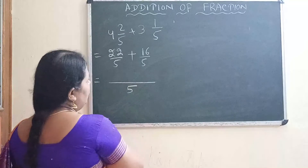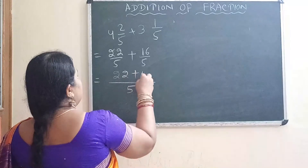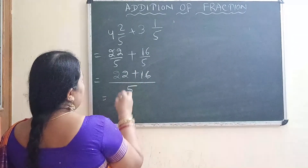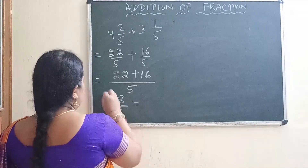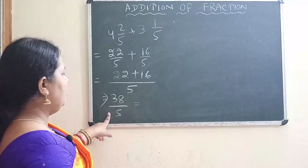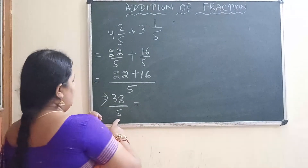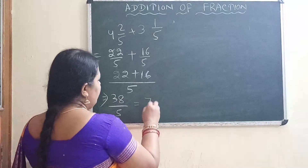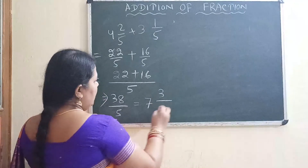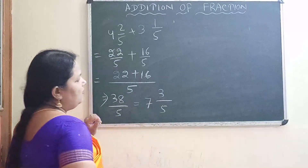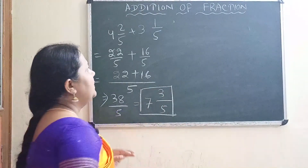Since both are like fractions, the common denominator is 5. Add the numerators: 22 plus 16 equals 38 by 5. This is an improper fraction, so we must convert it to a mixed number. Dividing: 5 sevens are 35, with 3 left over. So the answer is 7 whole 3 by 5.